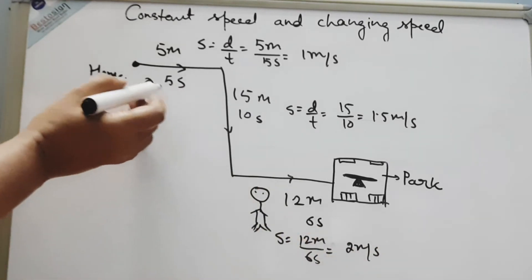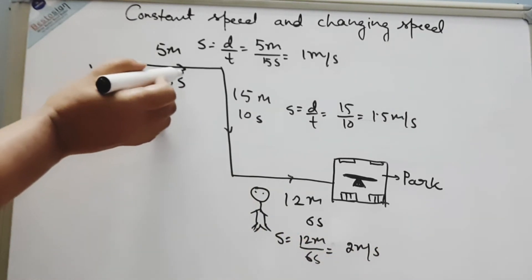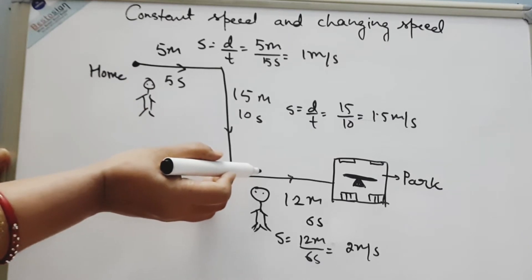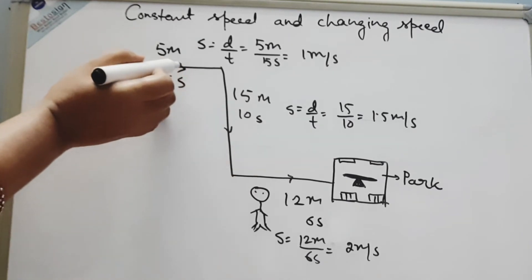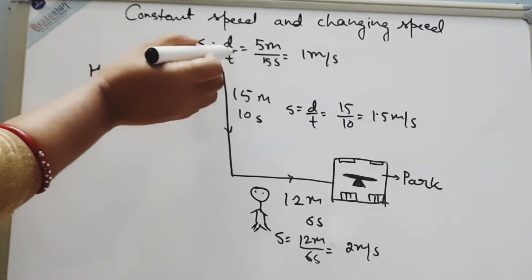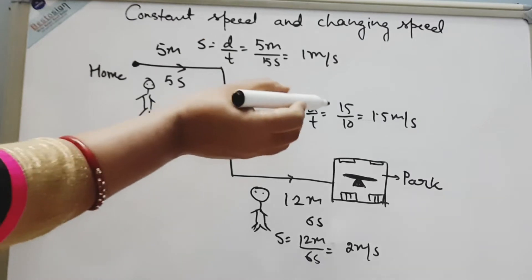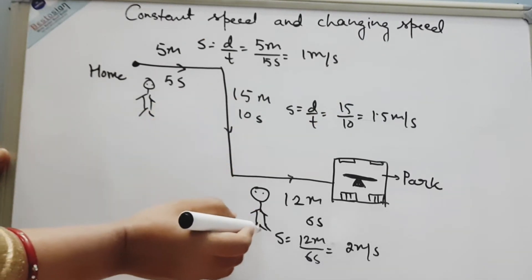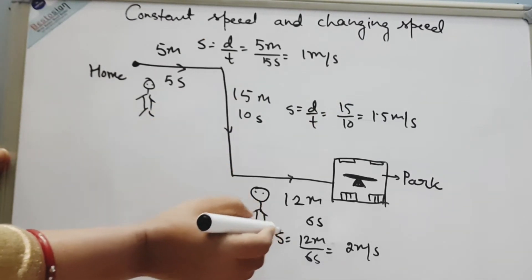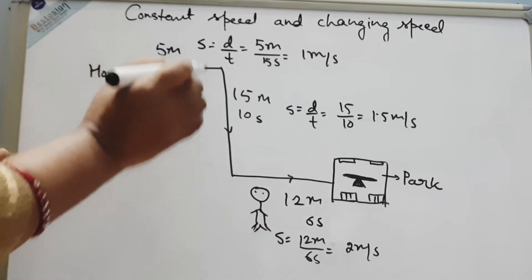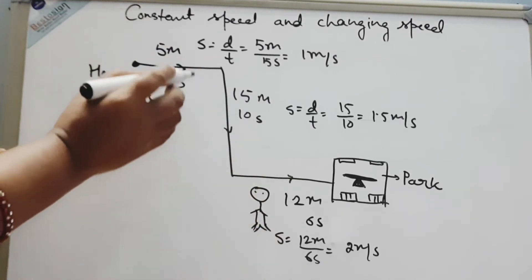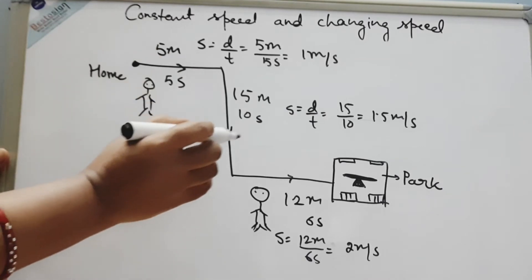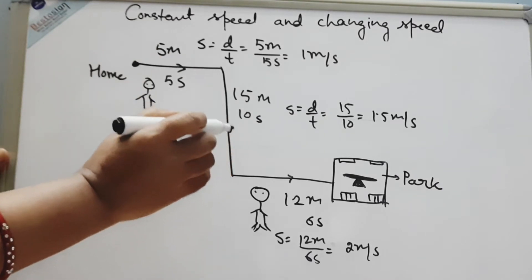So as you can see, he has a different speed during different parts of his journey: first section 1 meter per second, second section 1.5 meters per second, and third section 2 meters per second. So this type of journey is called changing speed — speed keeps changing throughout the journey.